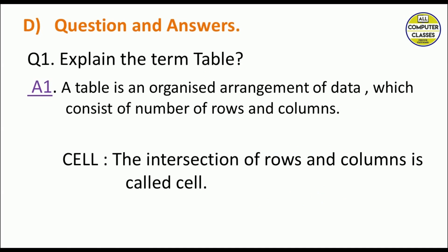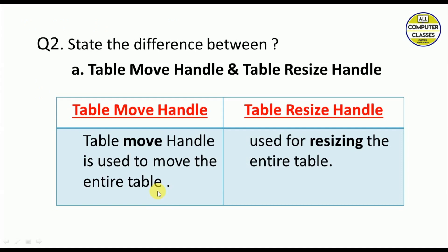Now for question answers. Explain the term table: a table is an organized arrangement of data which consists of a number of rows and columns. Also, the intersection of rows and columns is called a Cell.